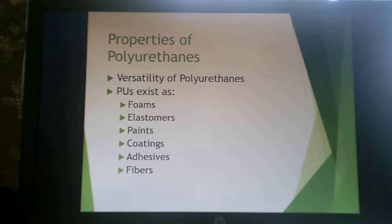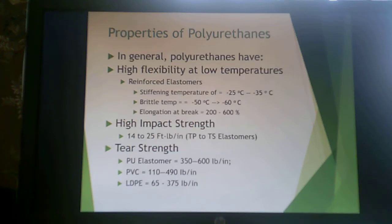Now we'll talk about properties of polyurethanes. Polyurethanes exist as a wide variety of forms: foams, elastomers, paints, coatings, adhesives, and fibers. In general, polyurethanes have high flexibility at low temperatures, high impact strength, and good tear strength. That's why they are engineering thermosets with superior properties.